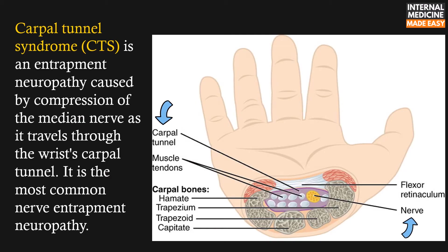Carpal tunnel syndrome is an entrapment neuropathy caused by compression of the median nerve as it travels through the wrist's carpal tunnel. It is the most common nerve entrapment neuropathy.